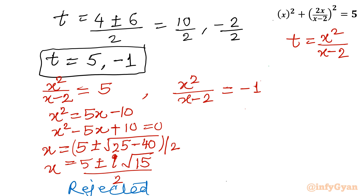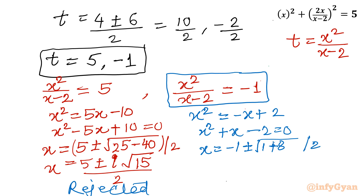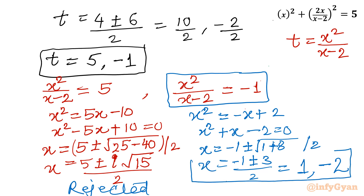Now consider the second equation: x²/(x - 2) = -1. Cross multiplying gives x² = -x + 2, so x² + x - 2 = 0. Applying the quadratic formula: x = (-1 ± √(1 + 8)) / 2 = (-1 ± √9) / 2 = (-1 ± 3) / 2. Taking the plus sign gives 2/2 = 1, and the minus sign gives -4/2 = -2. So our real solutions are x = 1 and x = -2.